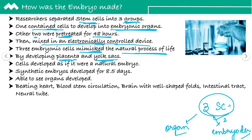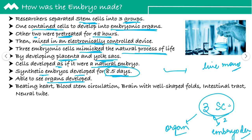These cells were developed as if they were from the natural embryo. And this synthetic embryo developed for 8.5 days only. Agar woh 8.5 days se further life kar paata toh we could develop a live mouse also, but unfortunately it just developed for 8.5 days. It was observed ki kuch organs develop hone shuru ho gaye — jiaise ki a beating heart, blood cell circulation, brain with well-developed folds, intestinal tracts, and neural tube formation.